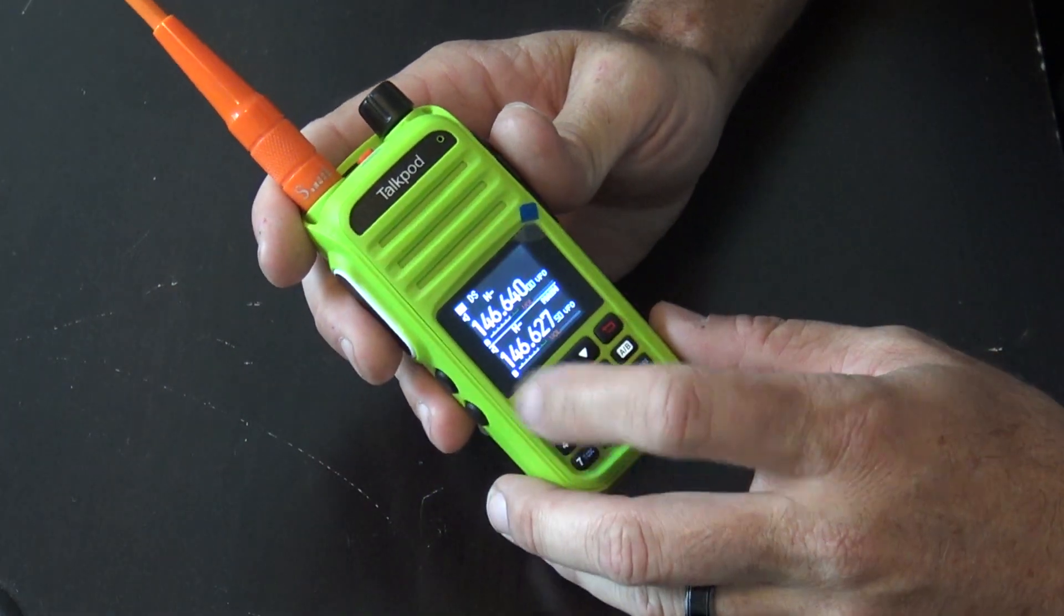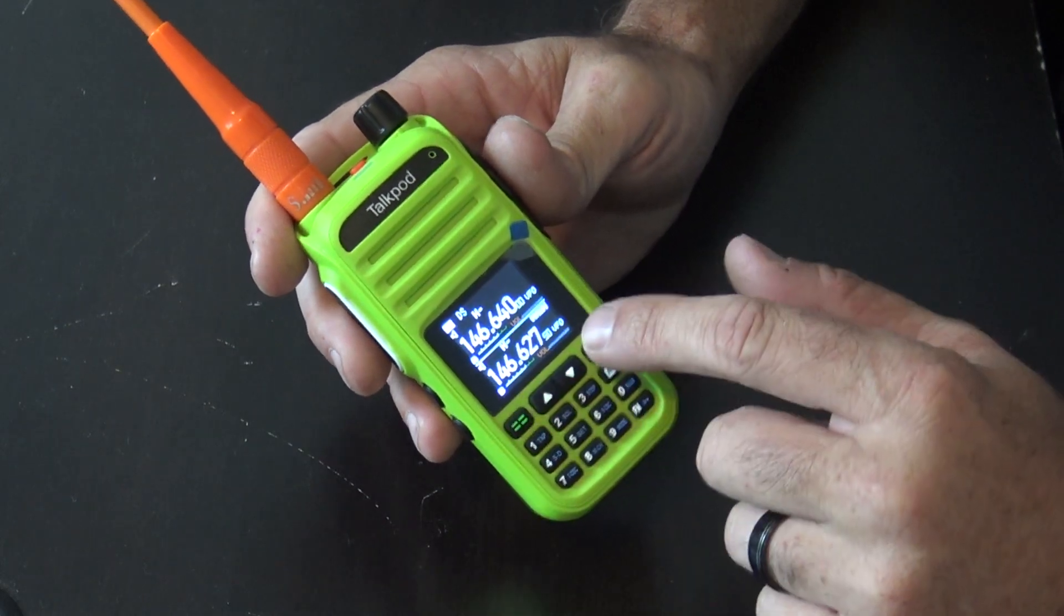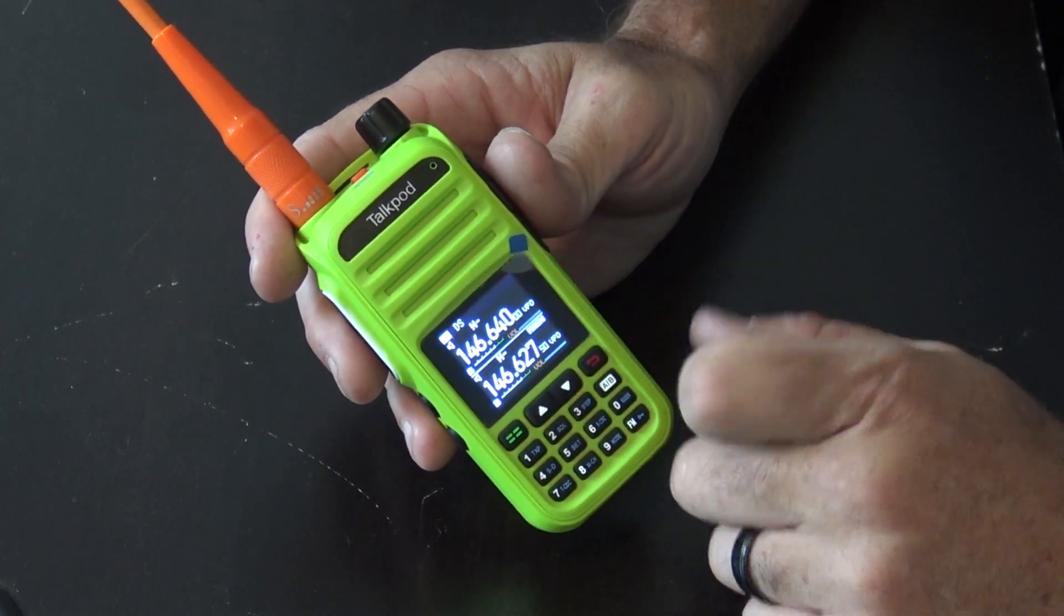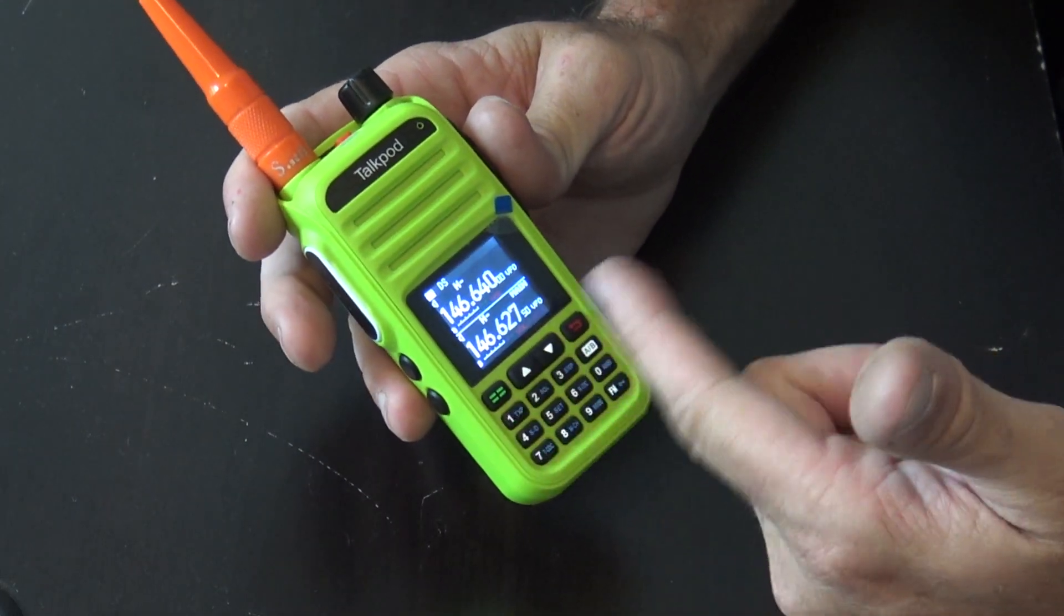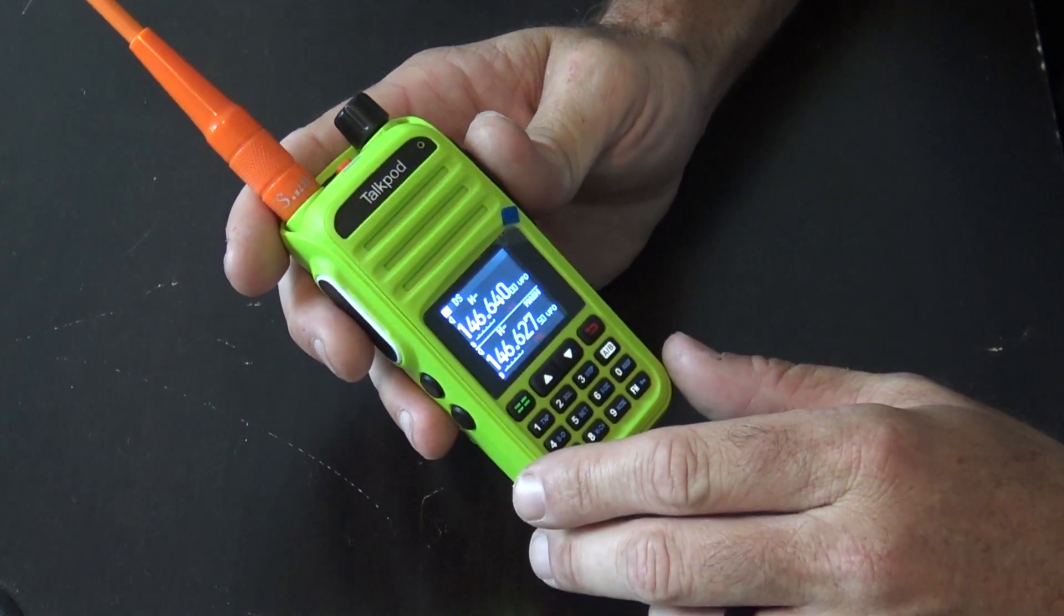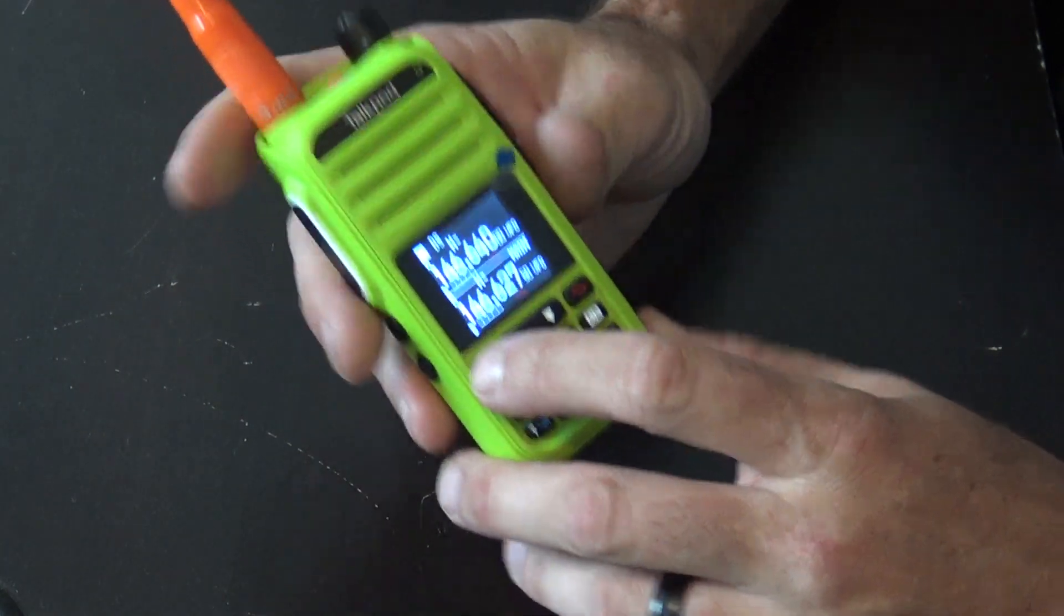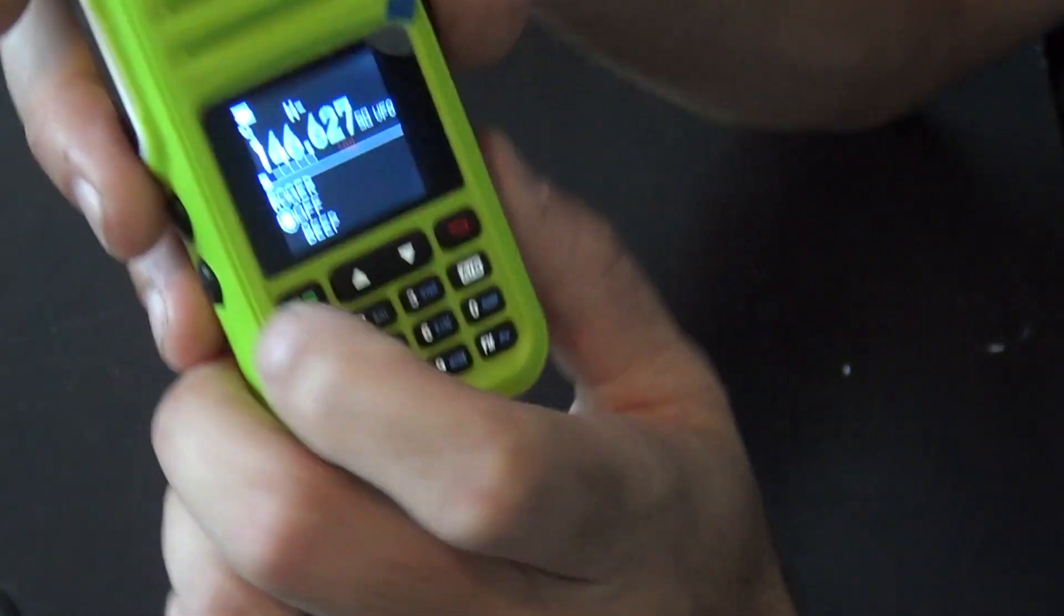When you're receiving on A, it'll come up and show you on B. And then when you transmit, you'll see A transmit. The thing about this is when you look in the menu here.